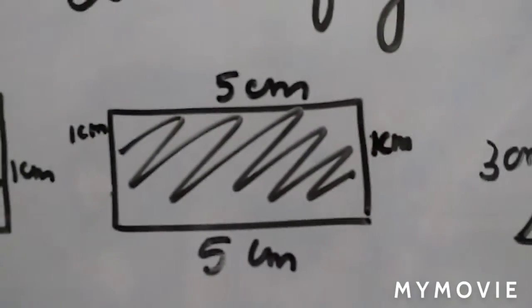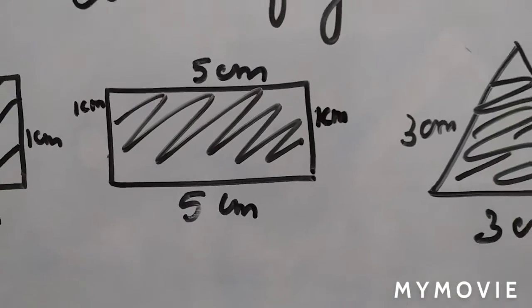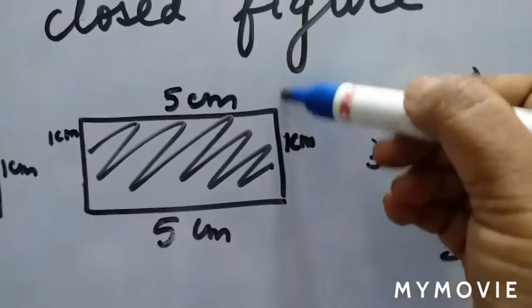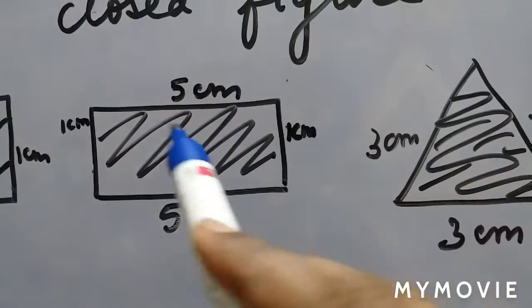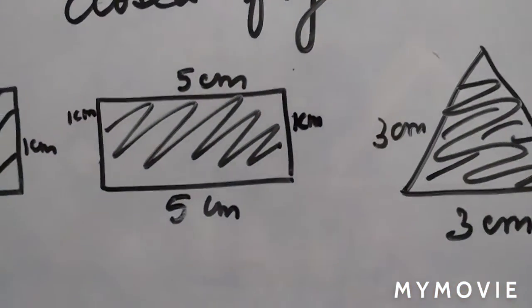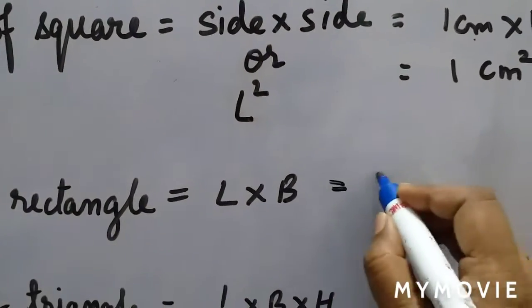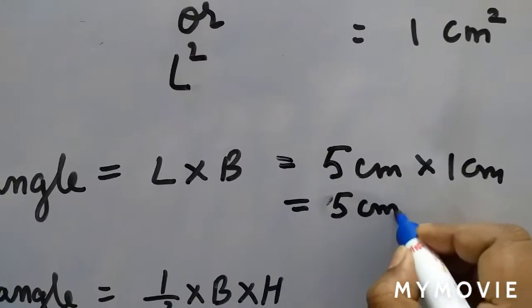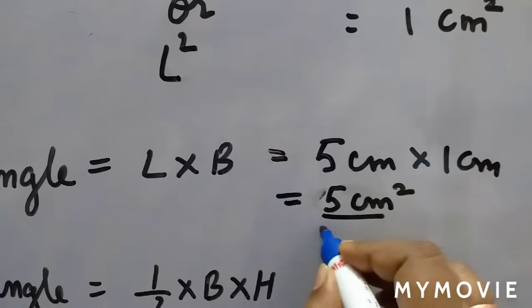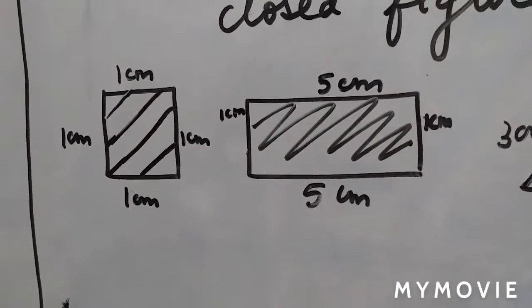Here is the area of rectangle. This was the rectangle. Its area formula is L into B. L means length and B means breadth. Here the length is 5 and breadth is 1. So area of rectangle will be L into B which will be equal to 5 centimeter into 1 centimeter, which is 5 centimeter square. This will be your answer.